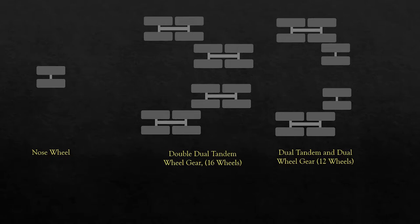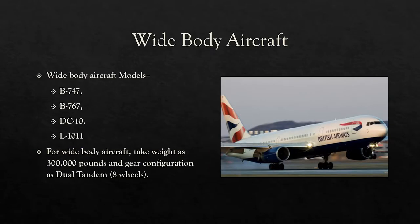Next we have dual tandem and dual wheel gear, which has six wheels on the left and six on the right, making 12 wheels total. Wide body aircraft models include the B747, B767, DC-10, and L-1011. For wide body aircraft we take the weight as 300,000 pounds and the gear configuration as dual tandem — eight wheels — regardless of their actual weight and actual wheel configuration.